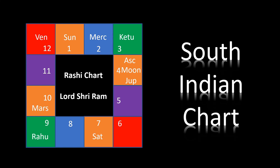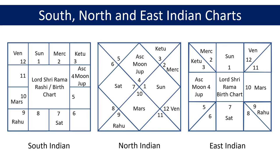The South Indian chart is based on the system where the zodiac signs or Rashis are fixed but the houses move. There are three variations of this chart in Vedic Astrology: the South Indian chart, the North Indian chart, and the East Indian chart. They all represent the same information but presented slightly differently. These charts can contain houses, zodiac signs or Rashis, ascendant or lagna, planets or grahas with their degrees, and various reference points such as Arudapadas.